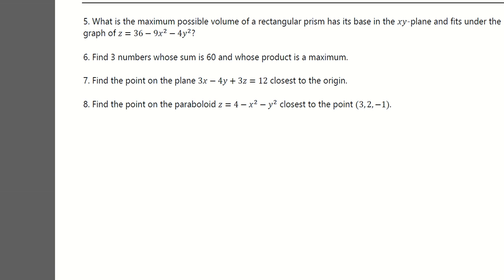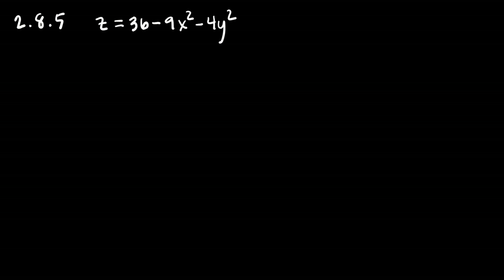The next problem is number 5: what is the maximum possible volume of a rectangular prism that has its base in the XY plane and fits under the graph of z = 36 − 9x² − 4y²? The graph is a downward-facing paraboloid-like surface. Where it hits the XY plane, where z = 0, that's going to be an ellipse.